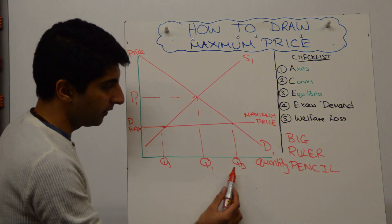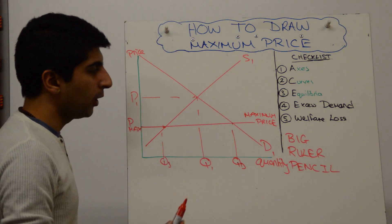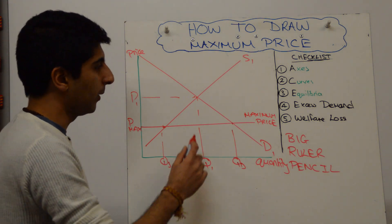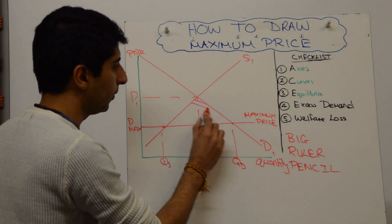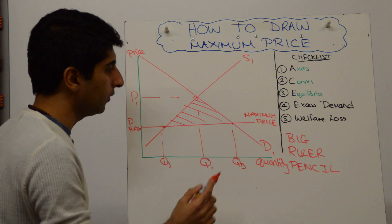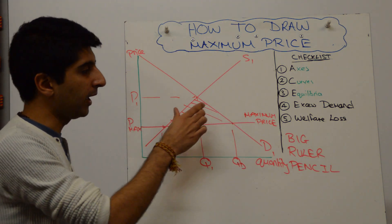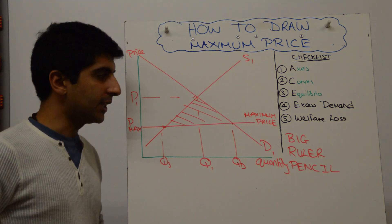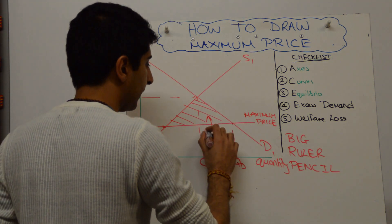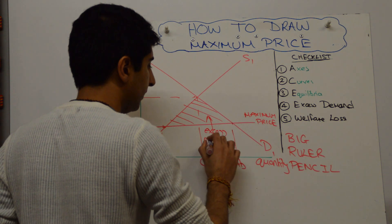What we have is that demand is much greater than supply. We have an excess demand. We can shade in the triangle, which makes that very clear. So this triangle represents all the points where demand is greater than supply up until the efficient equilibrium level. And we can label this down here as excess demand.